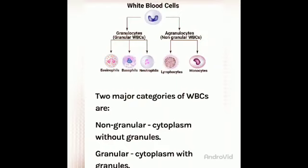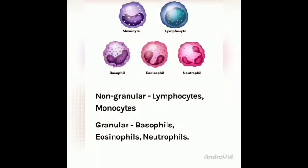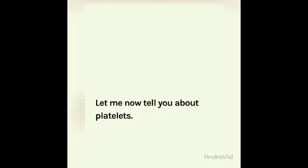Granulocytes are of three types: eosinophils, basophils, and neutrophils. Agranulocytes are of two types: lymphocytes and monocytes. Here you can see the basic structures of different types of cells. The nucleus has a different shape in each — here you can see a two-lobe, three-lobe structure, horseshoe-shaped structure, moon-shaped structure, and a circular structure.